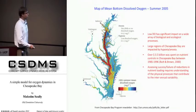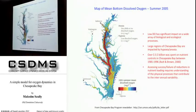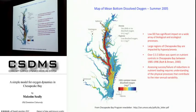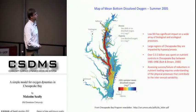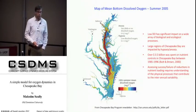To give some motivation for why we're looking at oxygen dynamics in Chesapeake Bay: this is a map of mean bottom dissolved oxygen content in the summer of 2005. Red colors represent regions of very low dissolved oxygen or complete absence. Large portions of Chesapeake Bay in the deep channel every summer go hypoxic or anoxic, which has a large impact on biological and ecological processes. Between 1985 and 1996, about $3.5 billion were spent on nutrient reduction, making this an issue of significant economic importance.